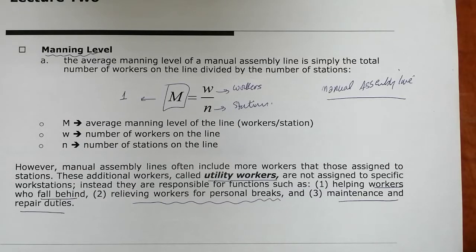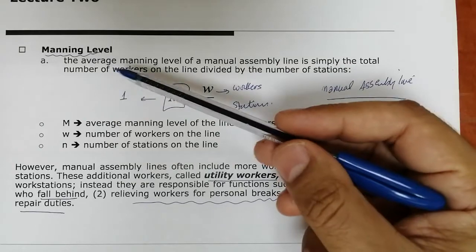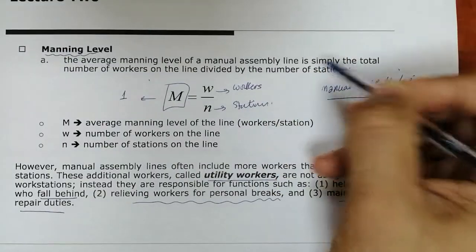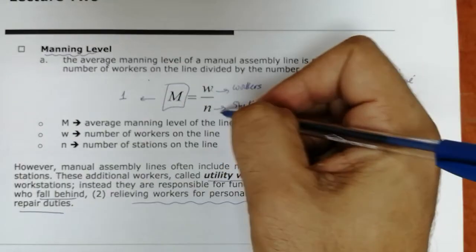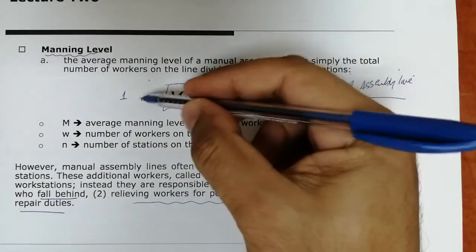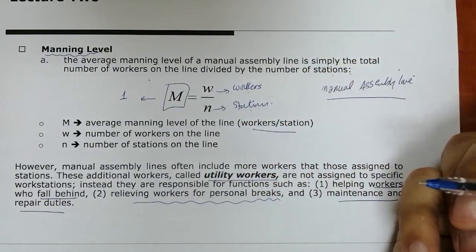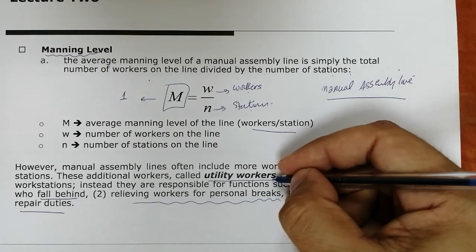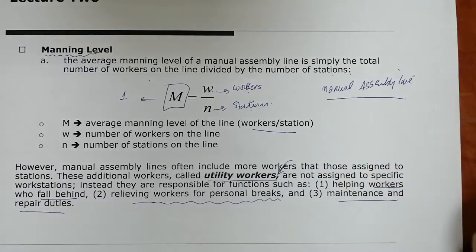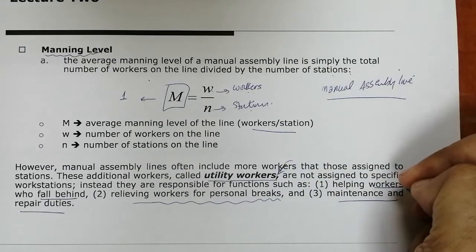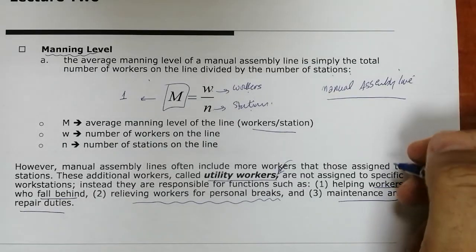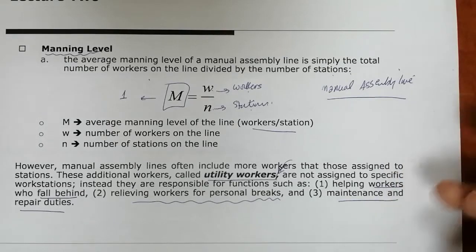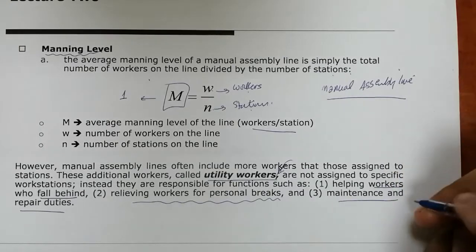The first part is to determine what's known as manning level, which is simply the number of workers of the line divided by the number of stations. W is the number of workers, N is the number of stations, and M is the average ratio of workers divided by station. We also define utility workers — they are not assigned to any station, but they help people if they fall behind, or they leave work for a personal break like lunch or tea break.